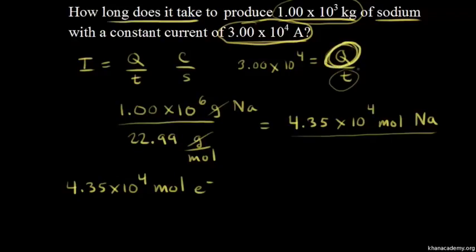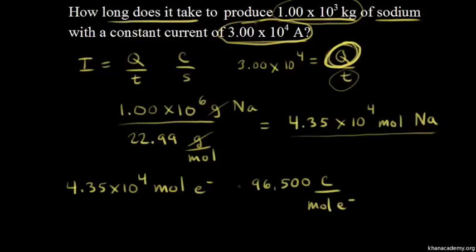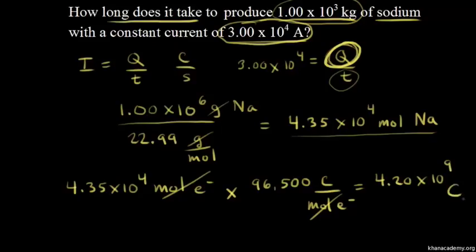We're trying to find the charge, and we can go from moles of electrons to total charge using Faraday's constant — the charge carried by one mole of electrons, which is 96,500 coulombs per mole. So multiplying: 4.35×10⁴ moles × 96,500 C/mol — the moles of electrons cancel — and we get 4.20×10⁹ coulombs. That's the charge needed to make this many moles of sodium.